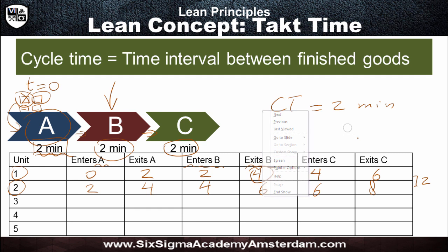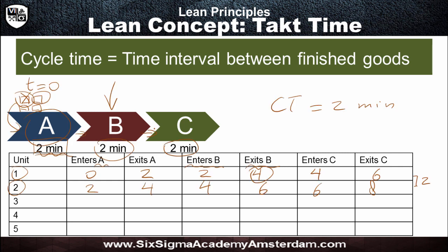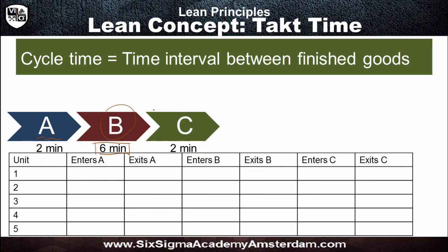Now I'm going to make things a little more complex. Suppose we're producing a more premium version of the same action figure where the painting takes longer. In the previous case, sub-process B — painting — took two minutes. Now sub-process B takes six minutes. What is now going to be the cycle time?